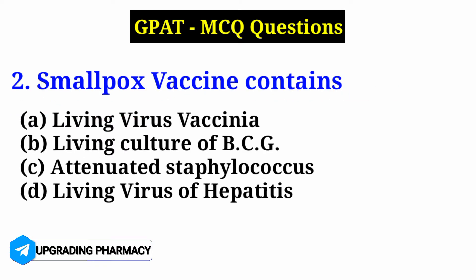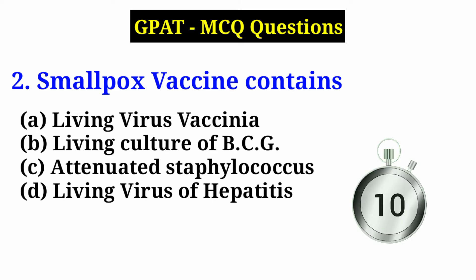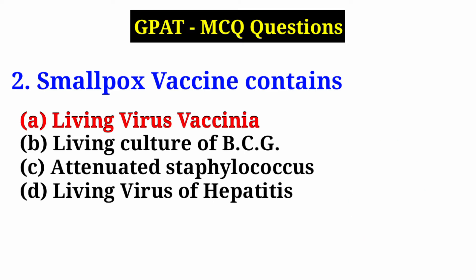Question 2: Smallpox vaccine contains — Option A: living virus vaccinia, Option B: living culture of BCG, Option C: attenuated staphylococcus, Option D: living virus of hepatitis. Answer is Option A — living virus vaccinia. The smallpox vaccine contains the living virus called vaccinia.